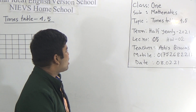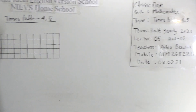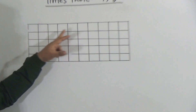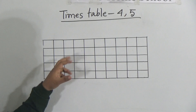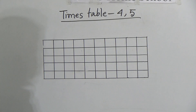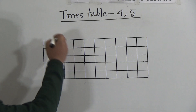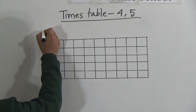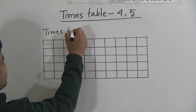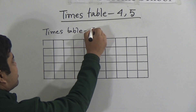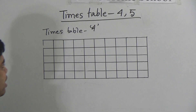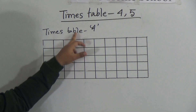So my dear students, let us start. Suppose this is your CW copy. Notice — this is your CW copy. So in your copy, how do you write times table? Just first of all, we want to write times table 4. This is times table 4.